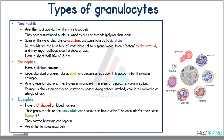The basophils have a U-shaped or lobed nucleus. The basophils have granules which take up the basic stain and become dark blue in color, accounting for their name — 'baso' for basic. They contain histamine and heparin, and they are similar to tissue mast cells.